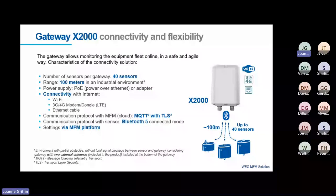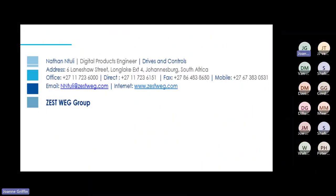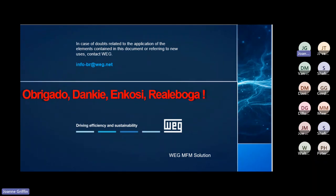The X2000 gateway supports 40 sensors at up to 100 metres from the sensor, functioning similarly to the previous gateway, the X1000. Thank you very much. Unfortunately we had some problems with the presentation, but thank you for listening and for your time.